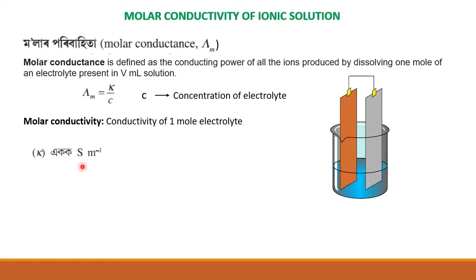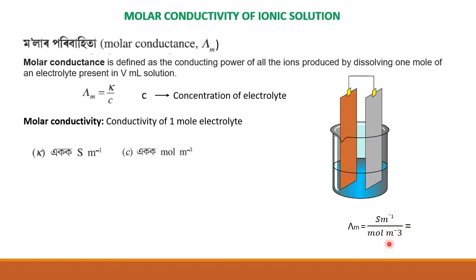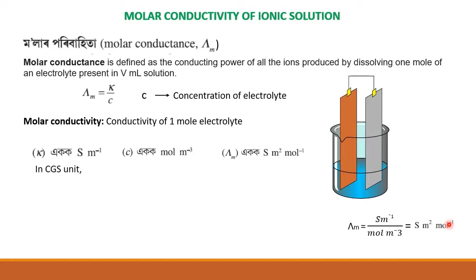We use 1 mole per meter. C is mole per meter cube. So lambda M equals kappa divided by C: siemens per meter divided by mole per meter cube, which gives siemens meter square per mole. So lambda M unit is S·m²/mol.